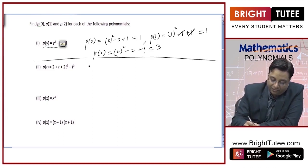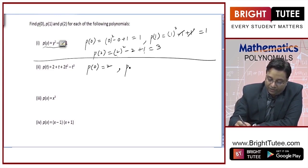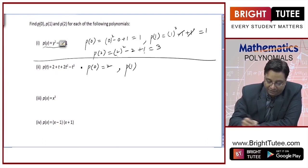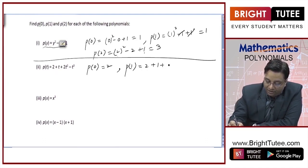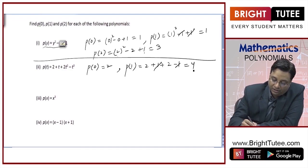In the second part, for p of 0 let us replace t by 0 everywhere, so it will be 2. For p of 1, replace t by 1 everywhere: it will be 2 plus 1 plus 2 into 1 squared minus 1. This 1 got cancelled and it is equal to 4.